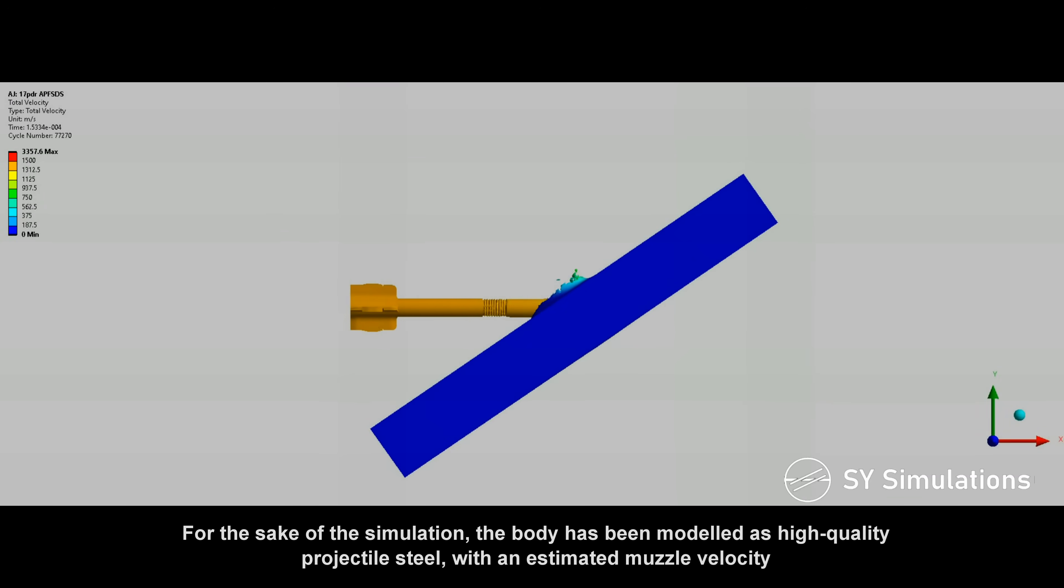For the sake of the simulation, the body has been modeled as high-quality projectile steel with an estimated muzzle velocity.